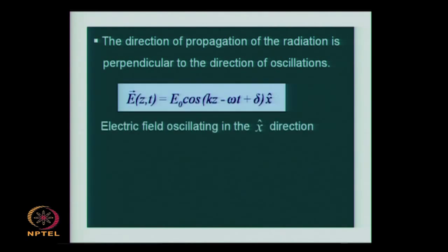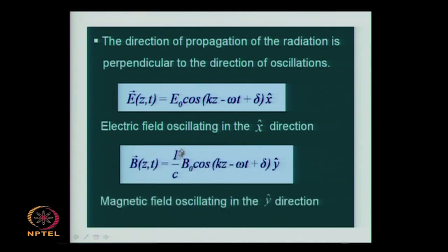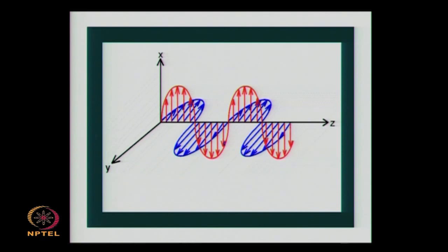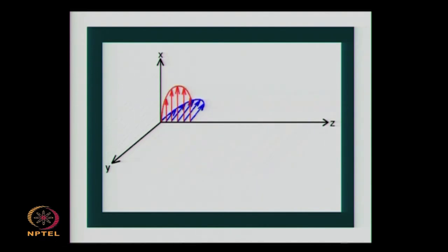The electric field in a very simple form is given by the cosine function — the electric field oscillating in the x-axis is cosine(kz − ωt), where k is the wave vector and ω is the angular frequency. The magnetic field is oscillating in the y direction with the same oscillation frequency. The blue lines represent one field and the red lines the other, both perpendicular to the direction of propagation, which is the z-axis.